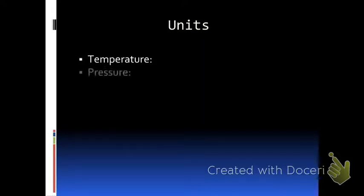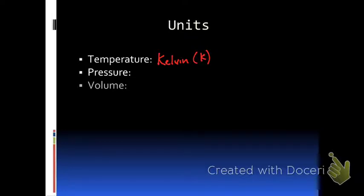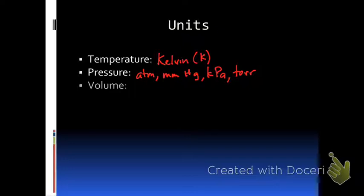For temperature we always use Kelvin — those are the units we always use when it comes to gas. For pressure there are several options: atmospheres, millimeters of mercury, kilopascals, and torr. Torr and millimeters of mercury are pretty much the same thing. For volume you can use liters, milliliters, or cubic centimeters. Those are the major ones you'll see.